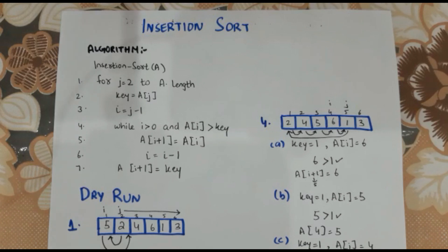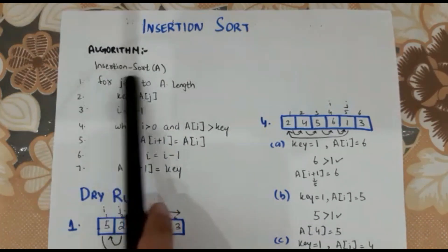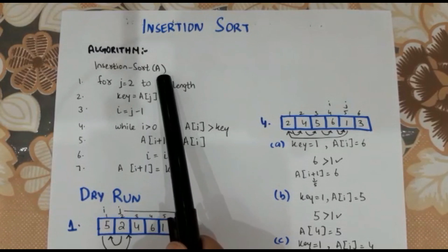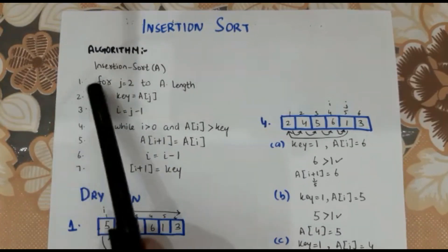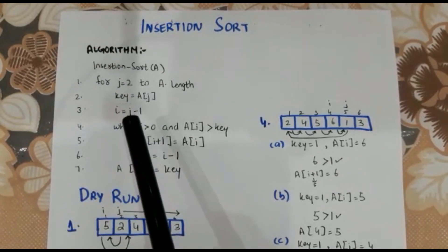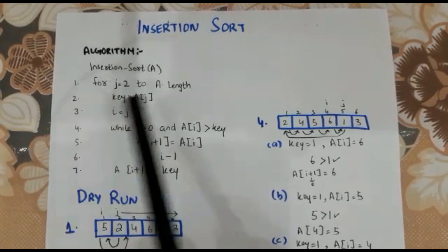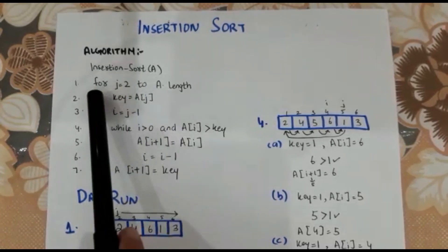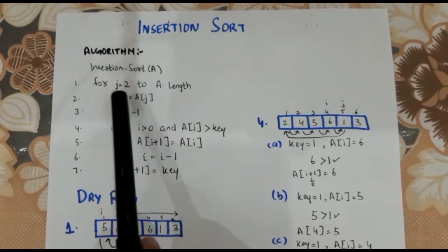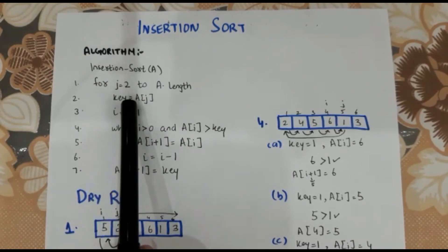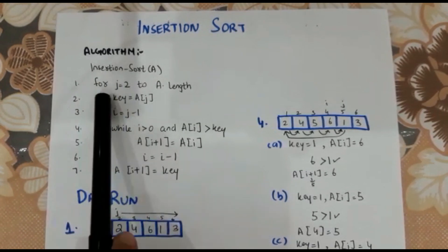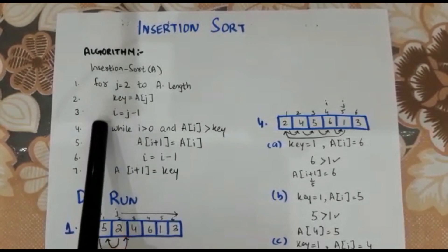First of all, we will discuss the algorithm and then we will try to run it. We have one algorithm given. The name of the function is insertion sort, and we have one parameter which is array A. Indentation is the space you are giving in the algorithm. For a for loop, the body starts with that indentation space.